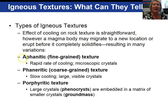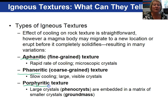Reviewing: aphanitic — not visible, fine-grained, rapid cooling at the earth's surface. Phaneritic — 'phaner' being visible — is coarse-grained, indicating slow cooling with large visible crystals; you do not need to magnify them with a microscope. Porphyritic texture is an in-between texture where you get large crystals called phenocrysts embedded in a matrix of smaller crystals called the groundmass.